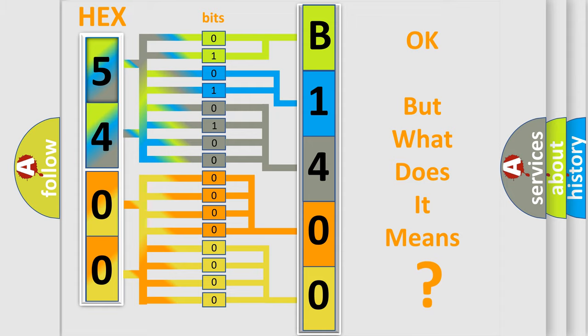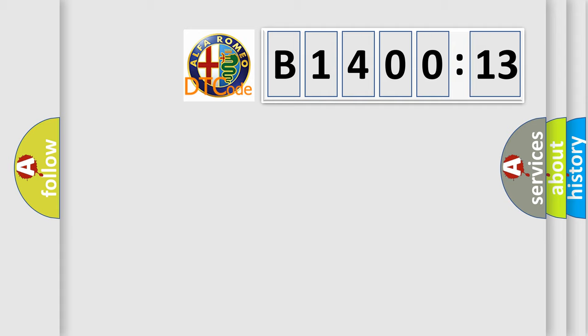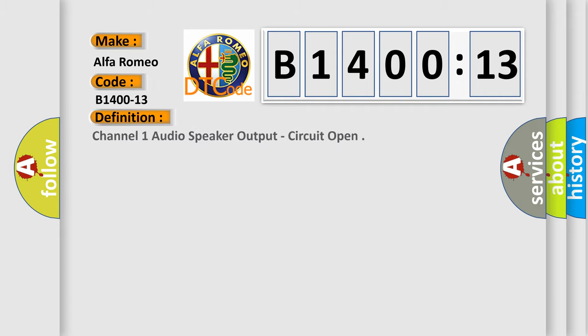We now know how the diagnostic tool translates received information into a more comprehensible format. The number itself does not make sense if we cannot assign meaning to what it actually expresses. So, what does diagnostic trouble code B1400-13 interpret specifically? For Alfa Romeo car manufacturers, the basic definition is: Channel 1 audio speaker output, circuit open.